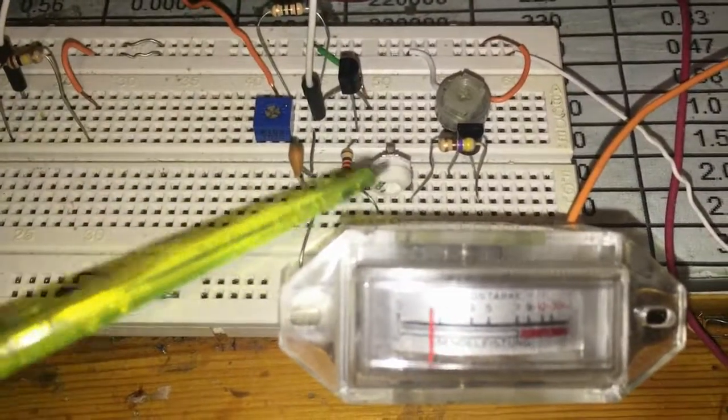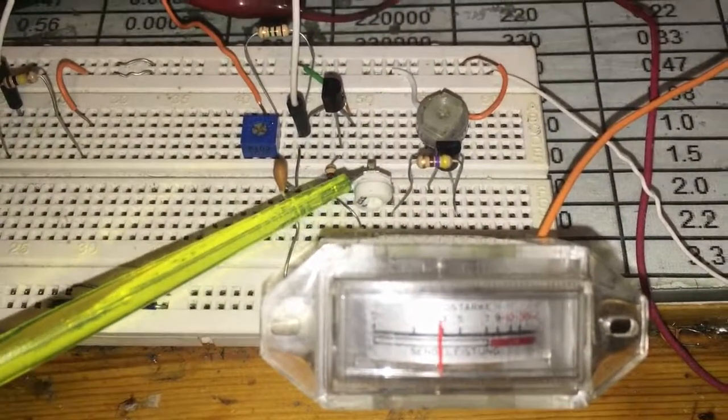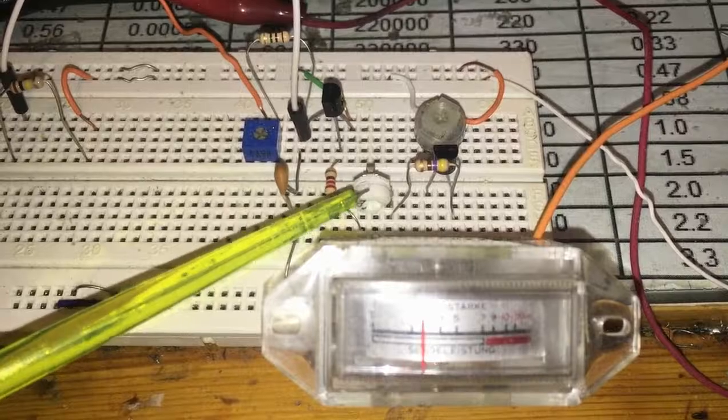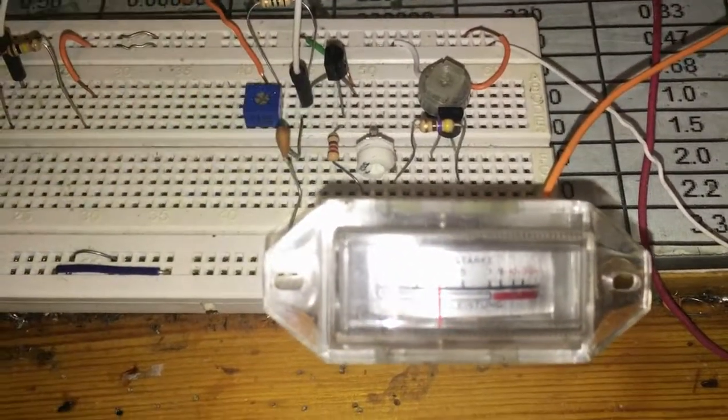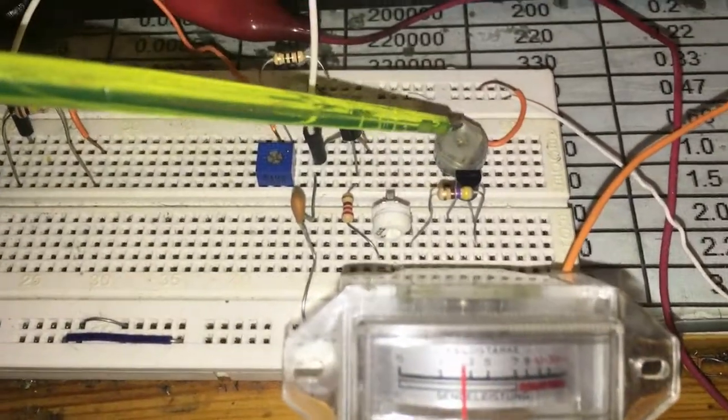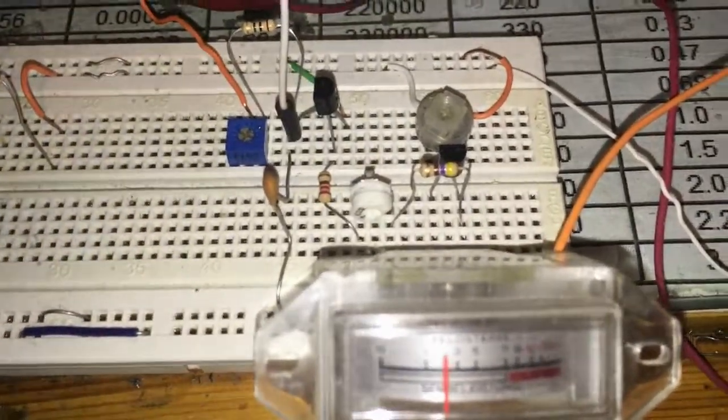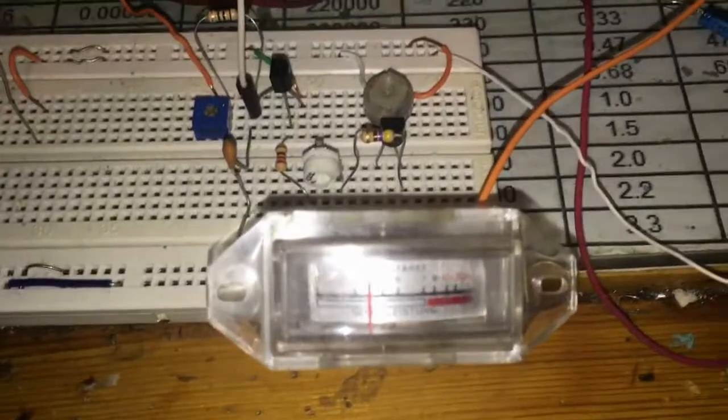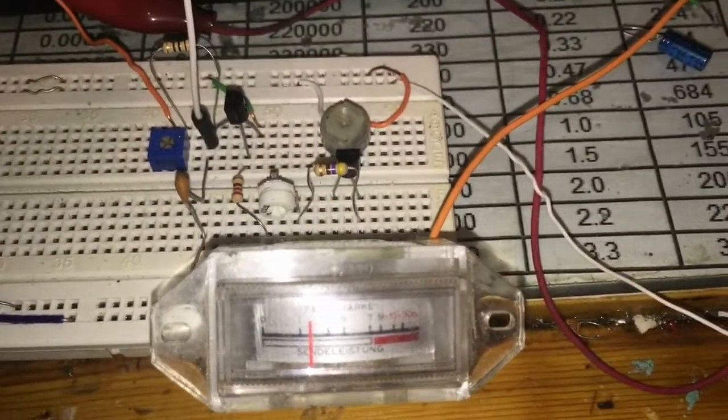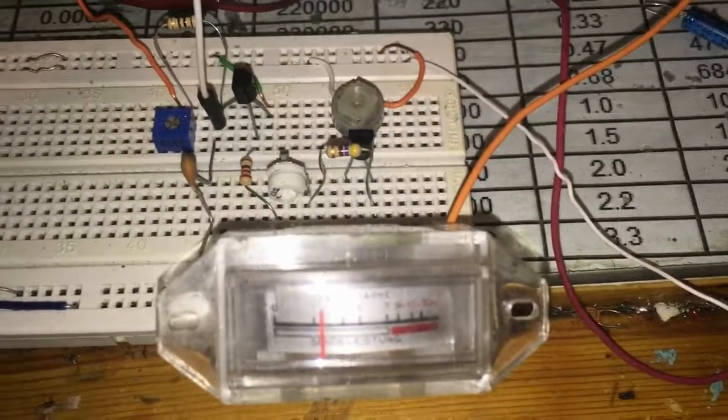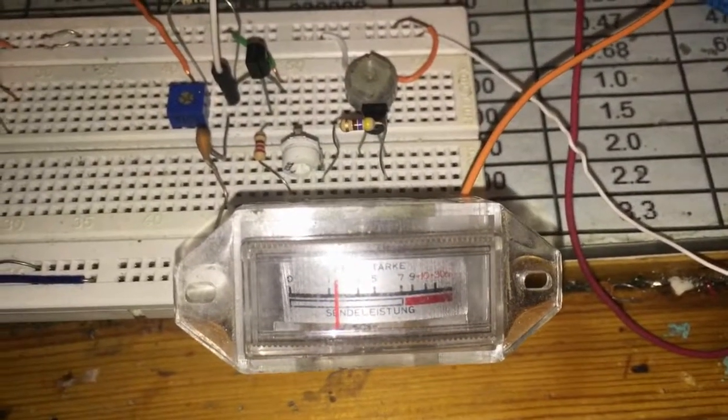And this one is also 500 kilo ohm for adjusting the VU meter fine tuning. The 2.2k and also the one mega ohm resistor is for adjusting the incoming voltage when you don't have exactly 10 volts.